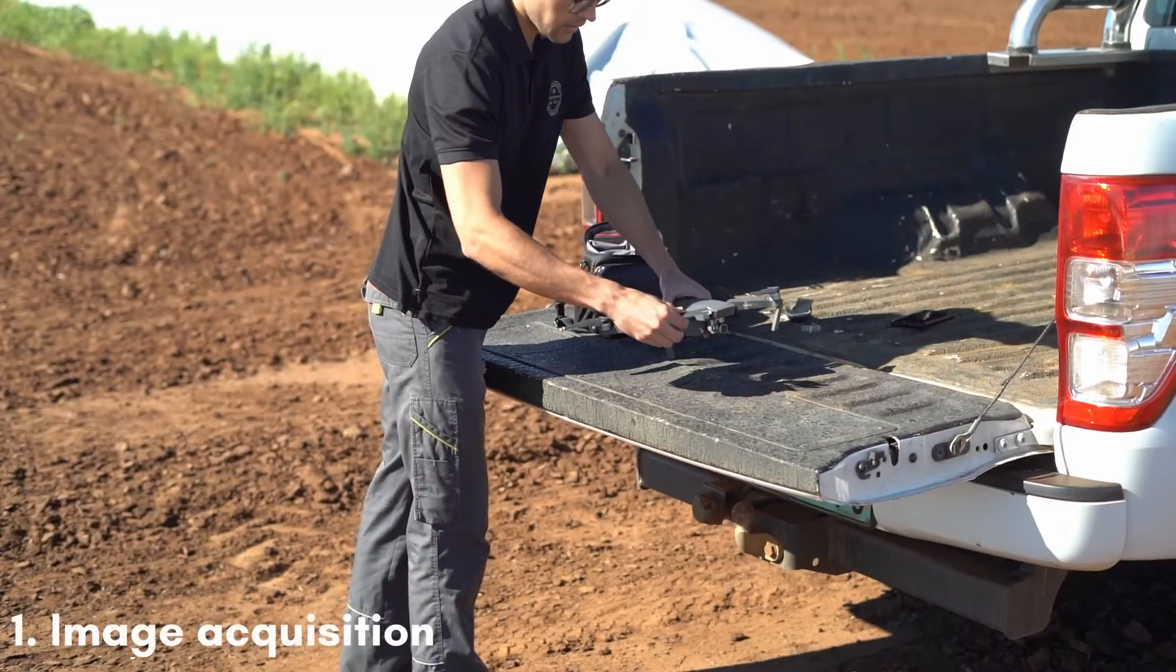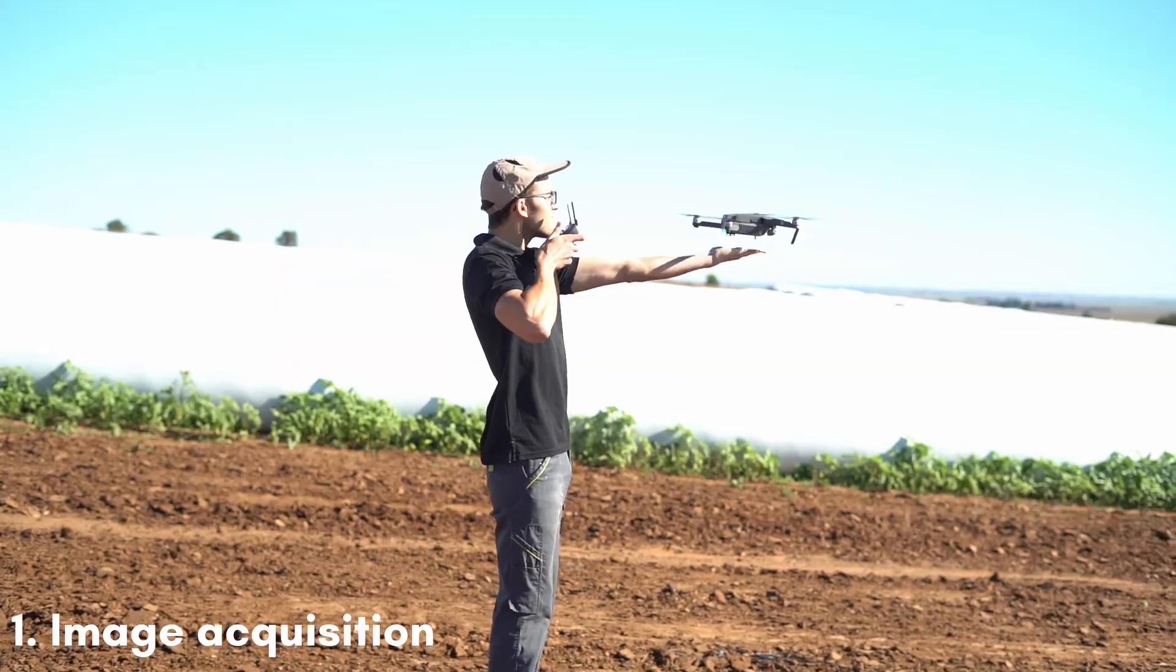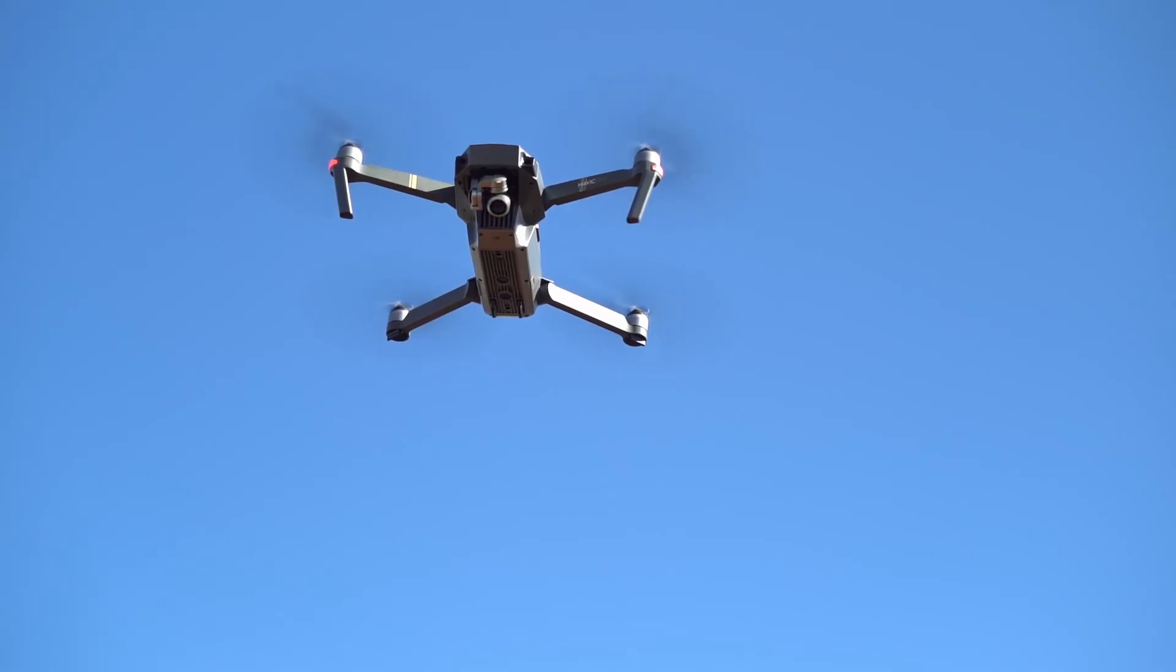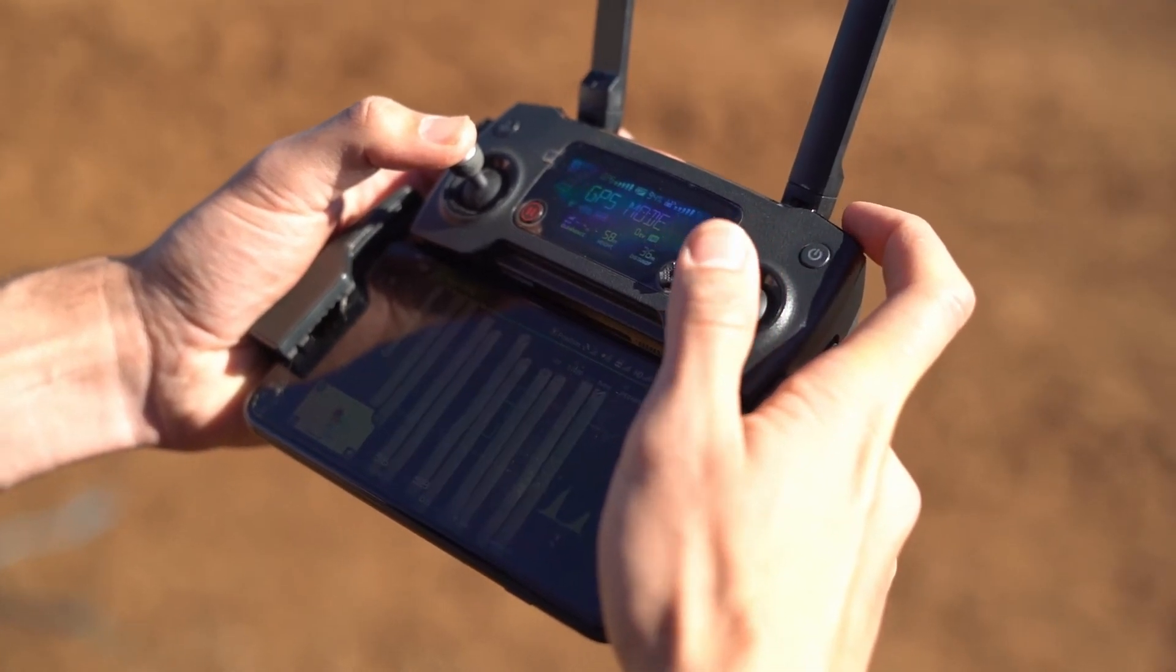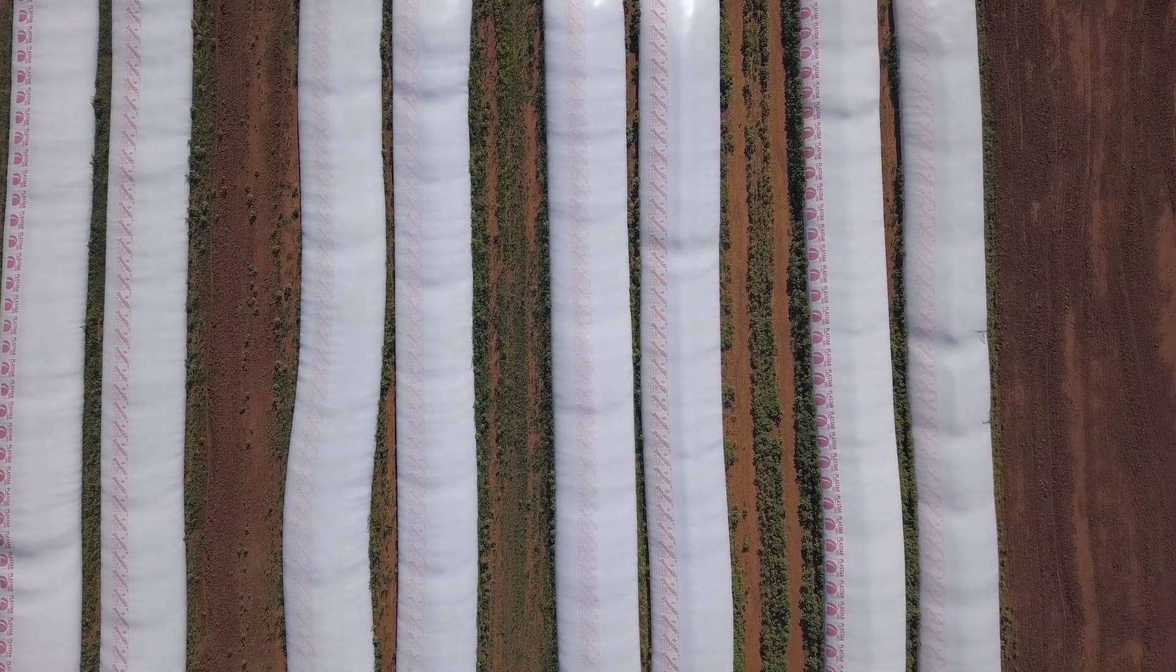First, images are acquired using a consumer UAV. With the camera pointing straight down, two images are captured: one left image and one right image. This is called a stereo image pair.